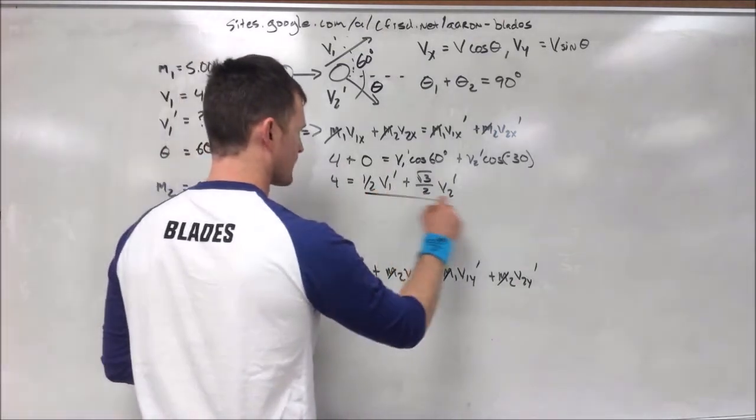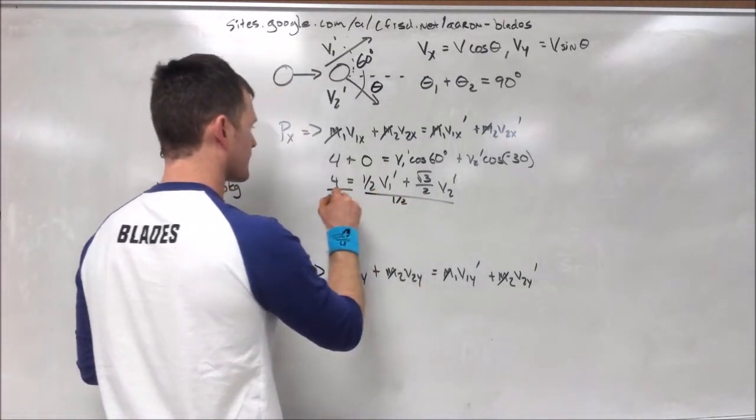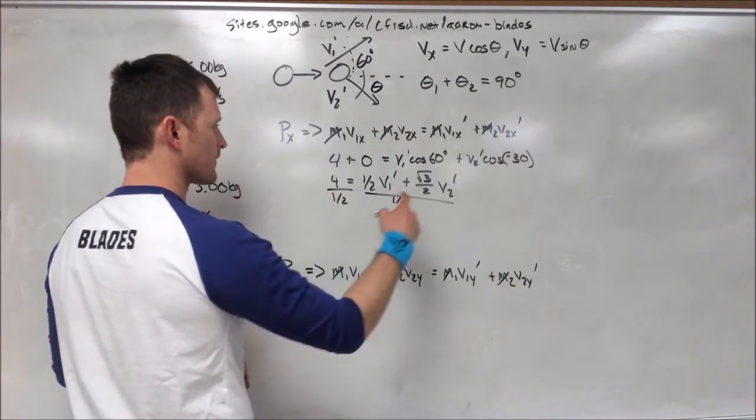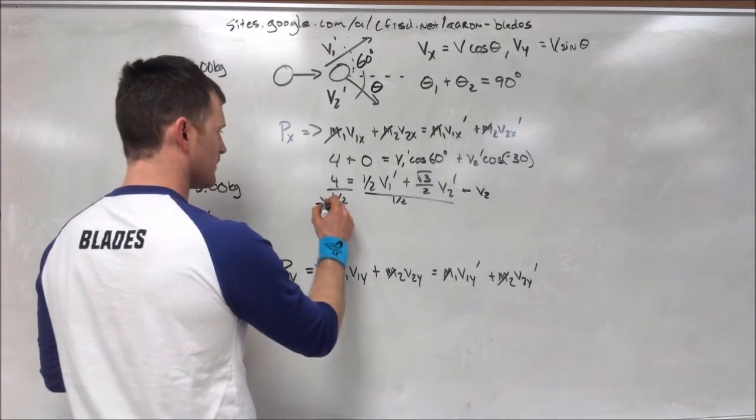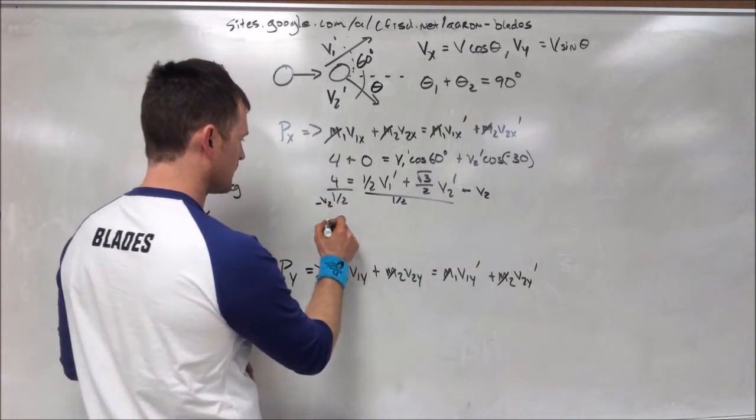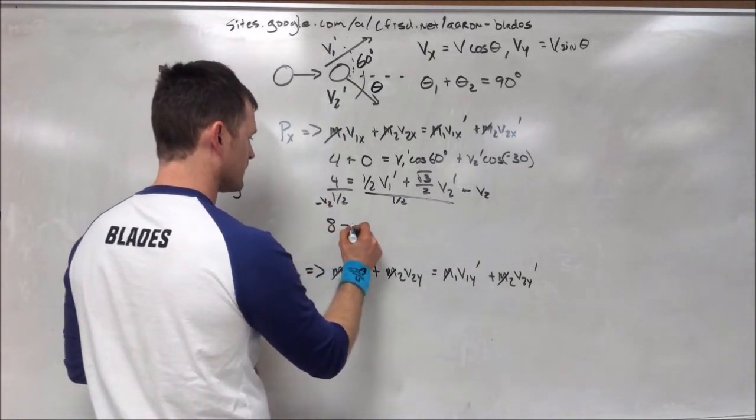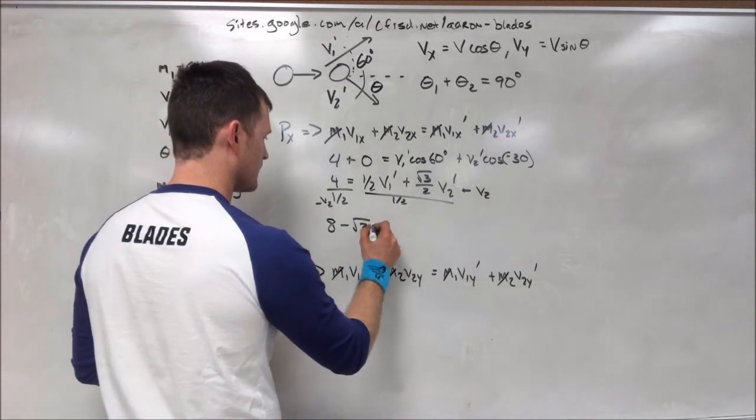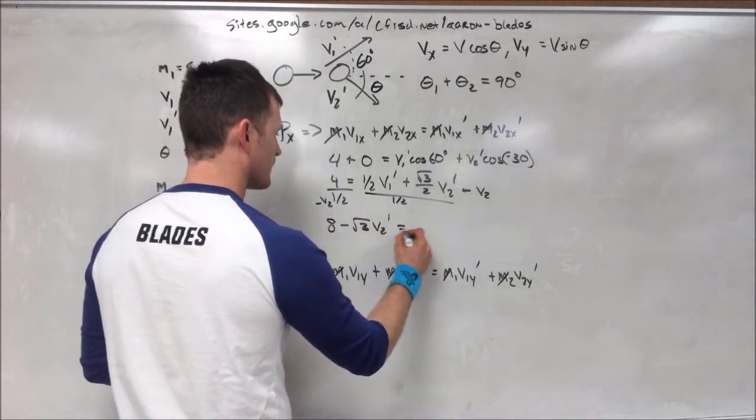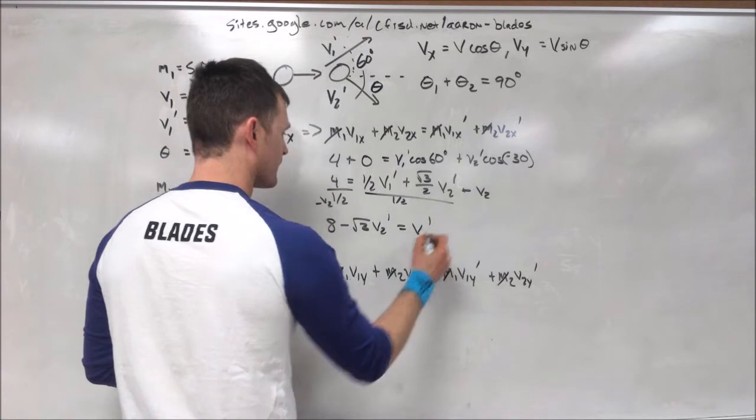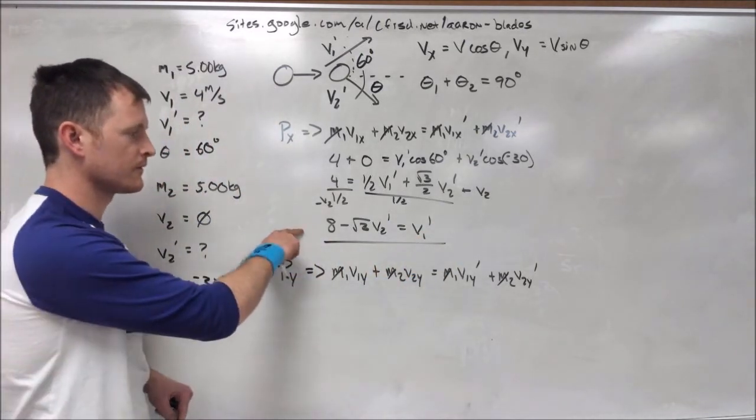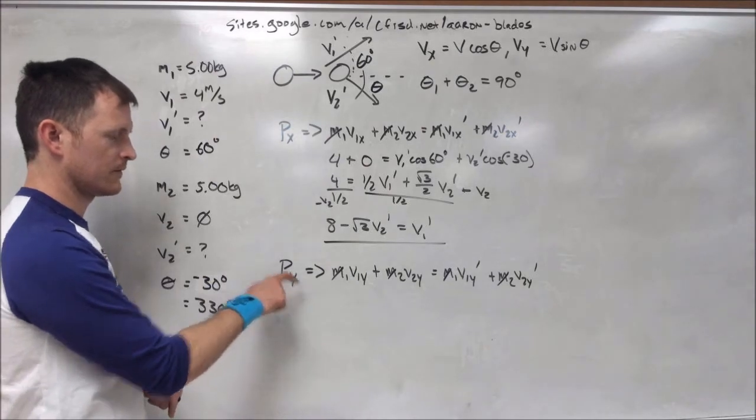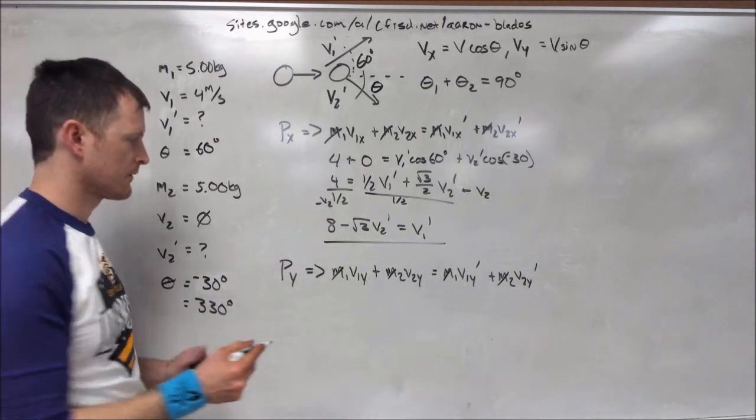That's the cosine of 330 degrees. We can factor out 1 half from both sides, and we end up with 8 equals v1 prime plus square root of 3 times v2 prime. Now, we can't go any further than this at this stage. We're going to have to solve the y equation and then set them equal to each other.